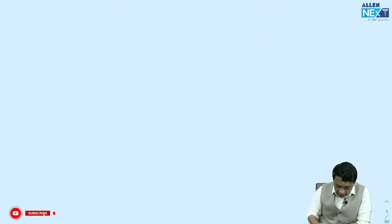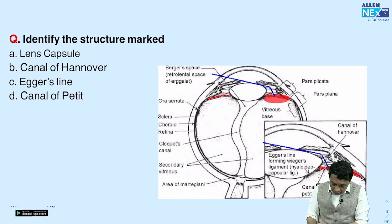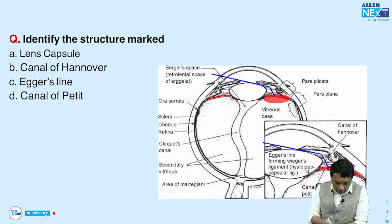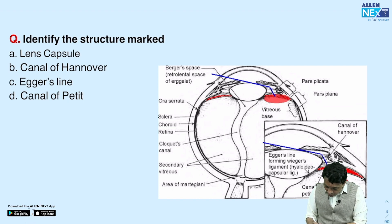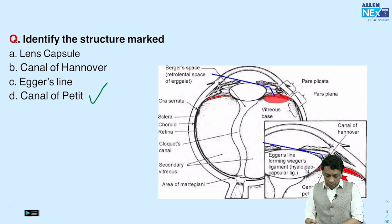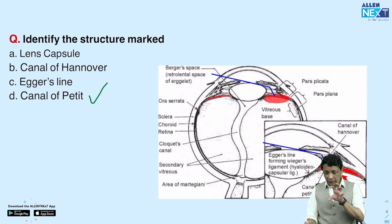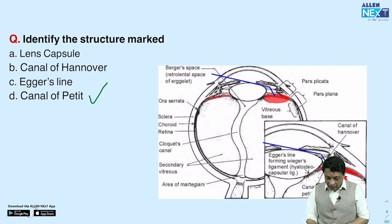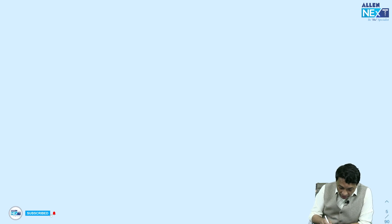Next question: identify the marked structure. This involves very small spaces around the lens and vitreous. The choices are lens capsule, canal of Hanover, Egger's line, canal of Petit, and the anterior hyaloid fossa. The arrow seems to point toward the space between the anterior hyaloid face and the posterior zonules — so the answer appears to be the canal of Petit. Let's draw a diagram for more clarity.